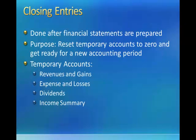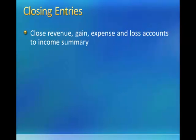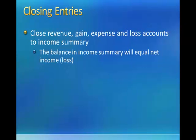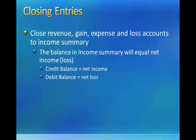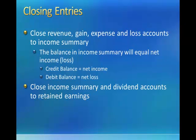The temporary accounts are revenues and gains, expenses and losses, dividends, and the income summary account. For the sports fans out there, you can think of this as after the game, you want to reset the scoreboard to zero. Closing entries are done by closing the revenue, gain, expense, and loss accounts to the income summary account. After we do this, the balance in the income summary account will be equal to the net income or loss. If there's a credit balance in the income summary account, we will have net income. If there's a debit balance in the income summary account, we'll have a net loss.